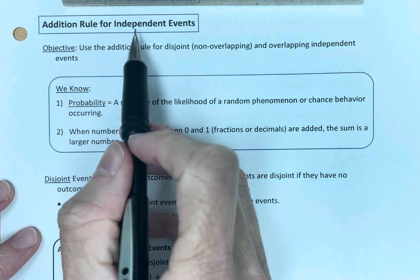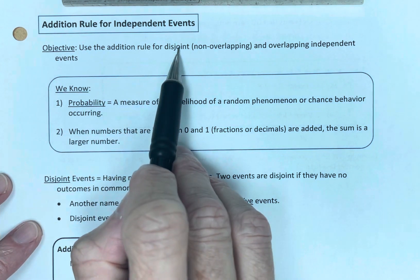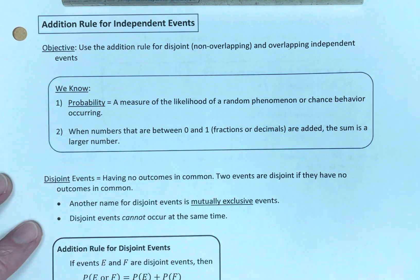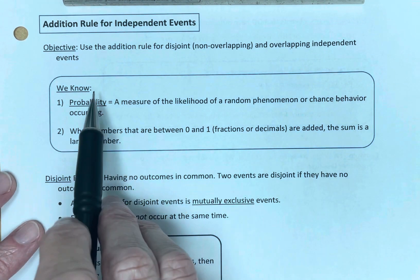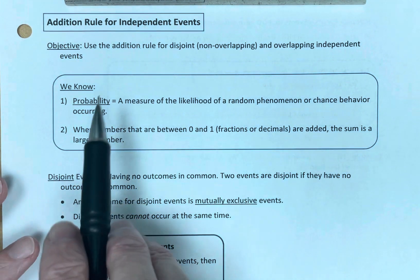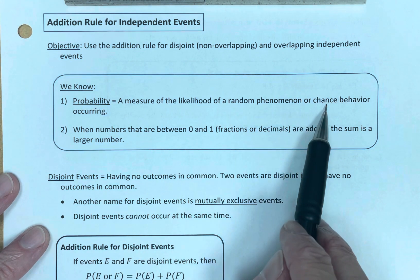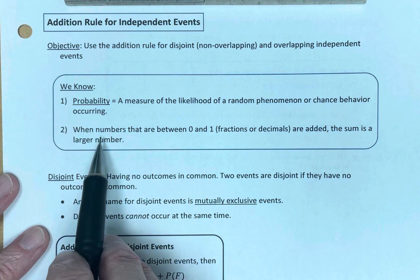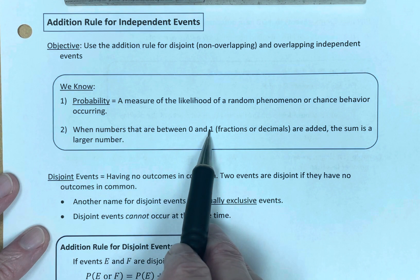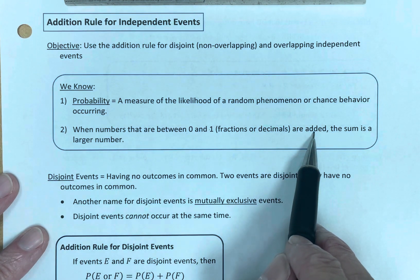The addition rule for independent events. Our objective: we want to use the addition rule for disjoint, non-overlapping, and overlapping independent events.